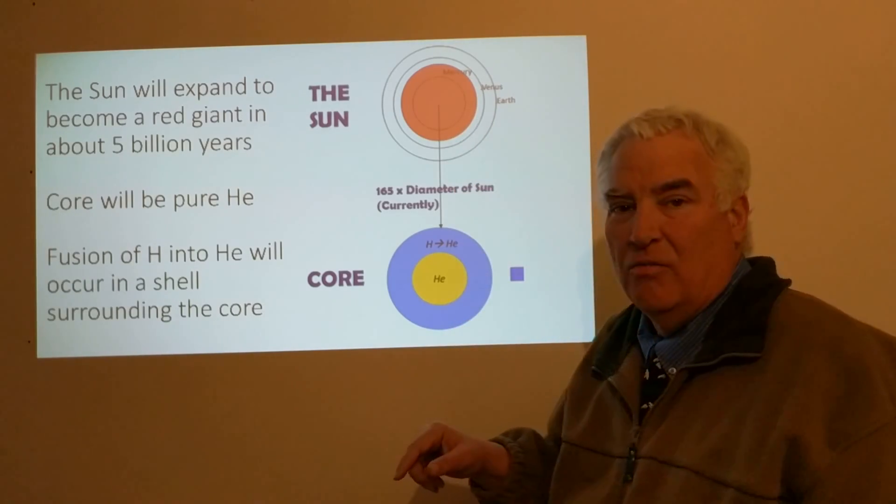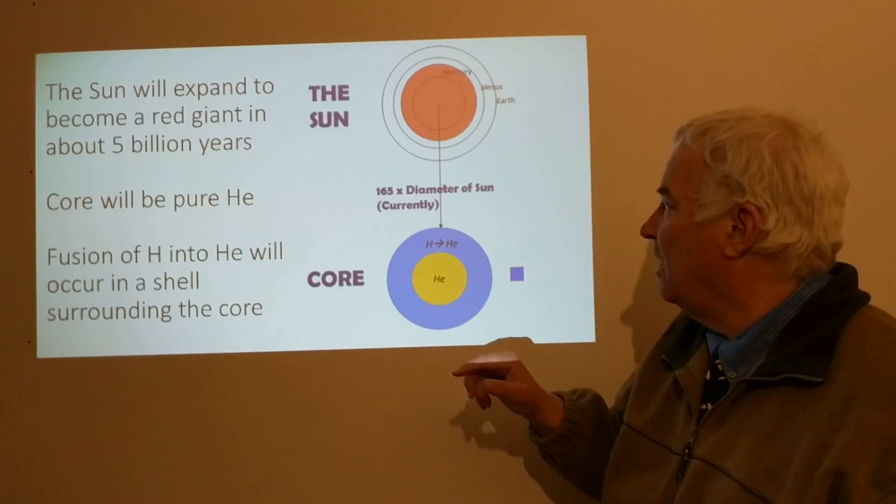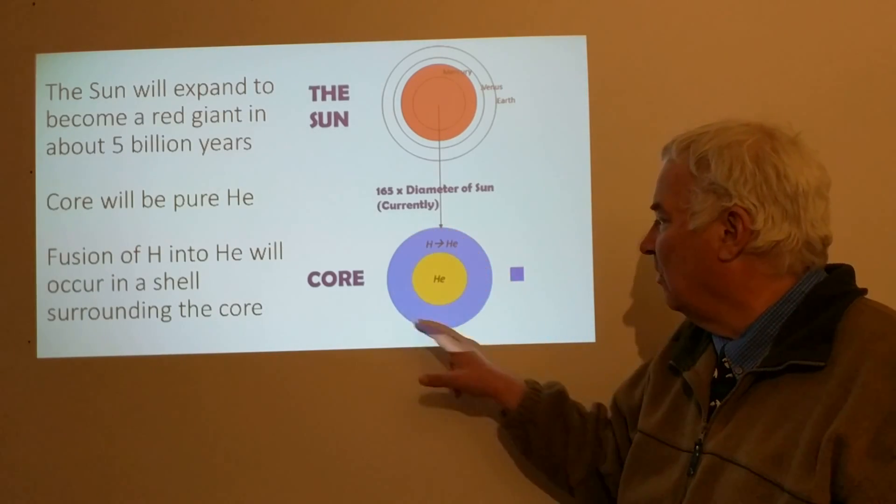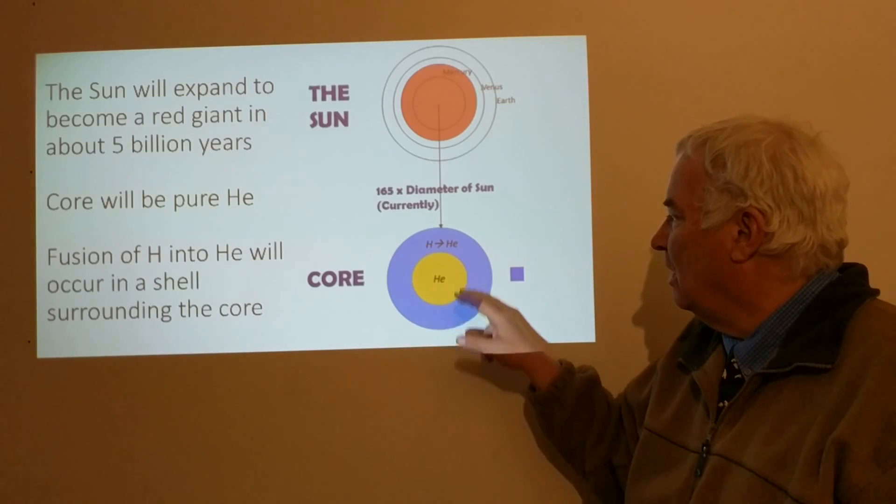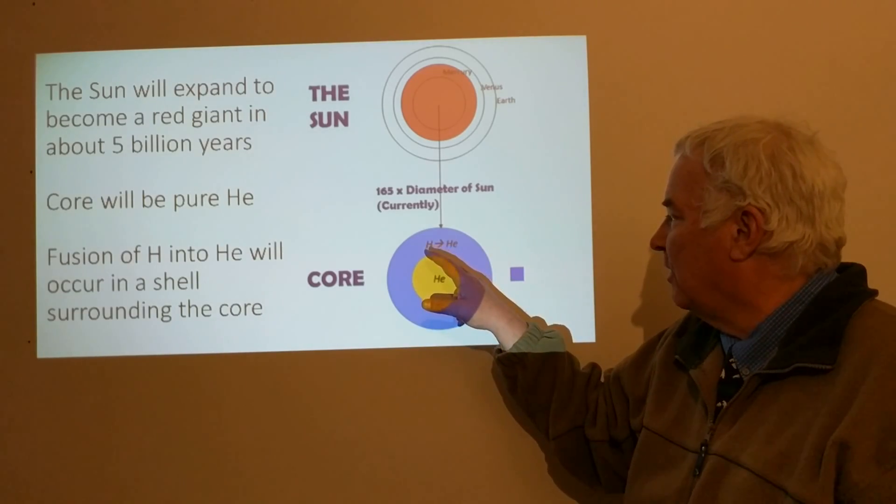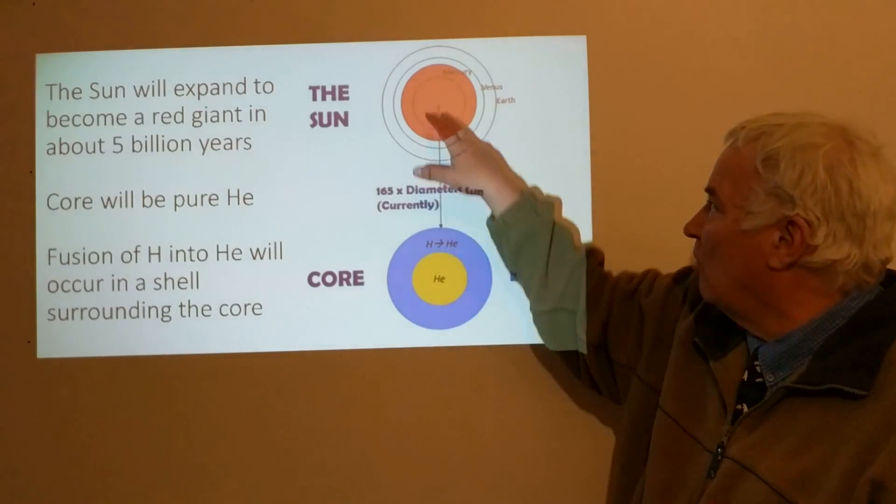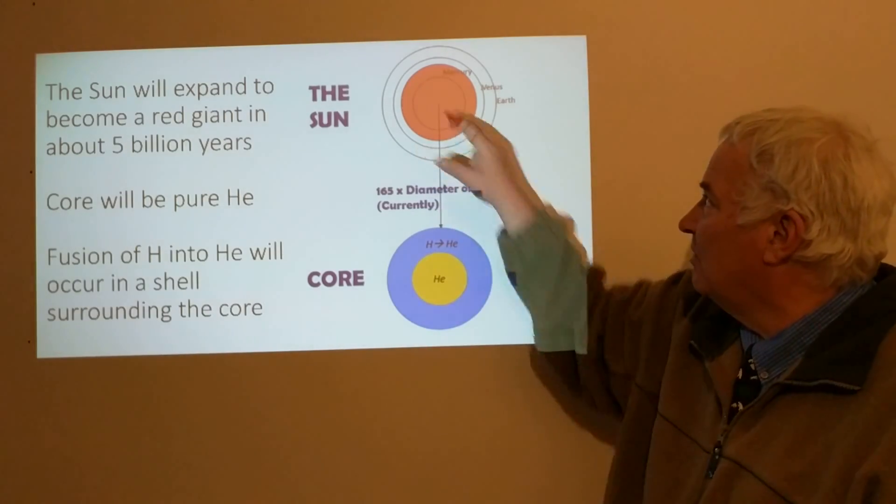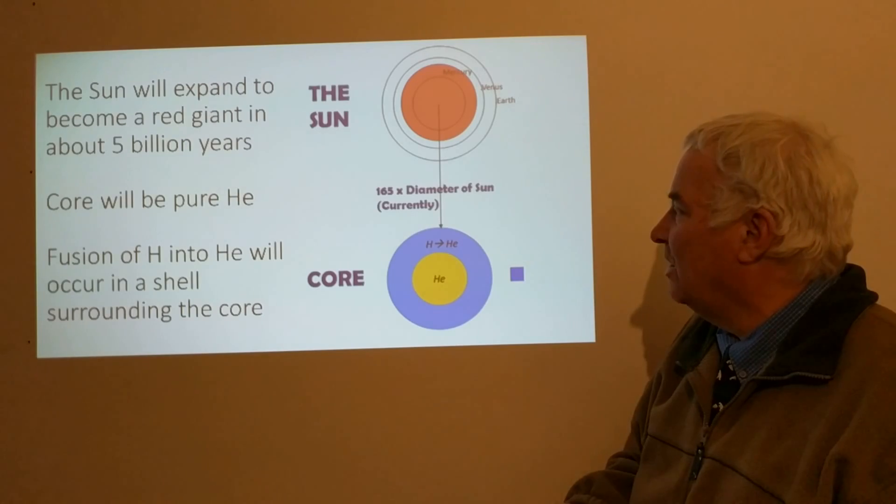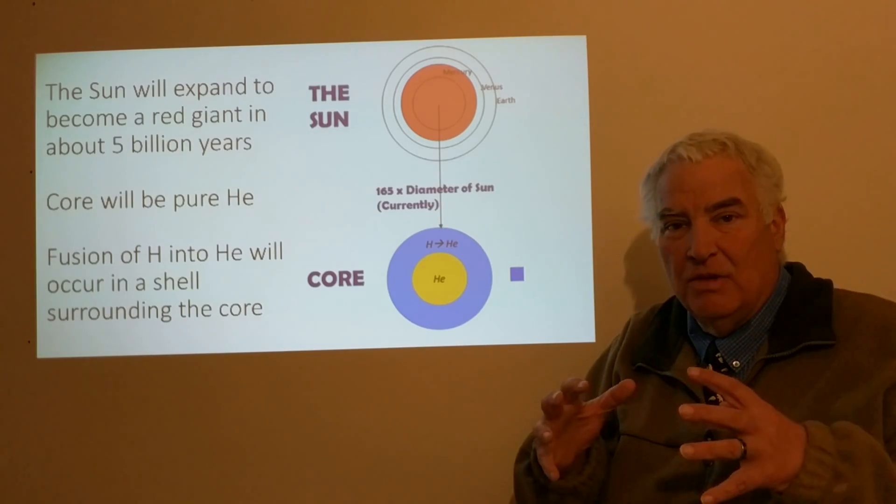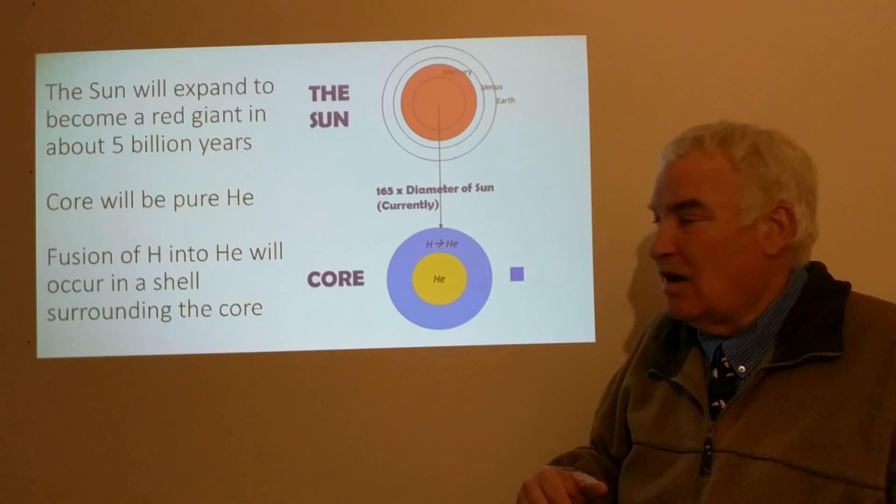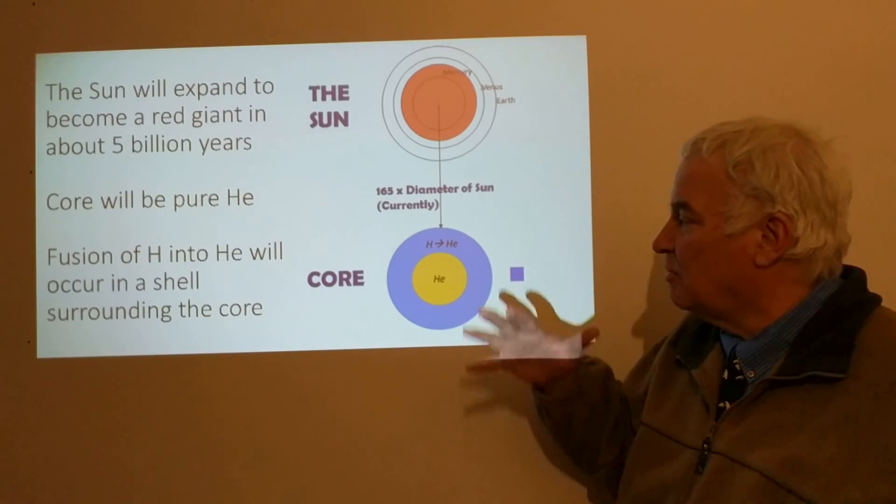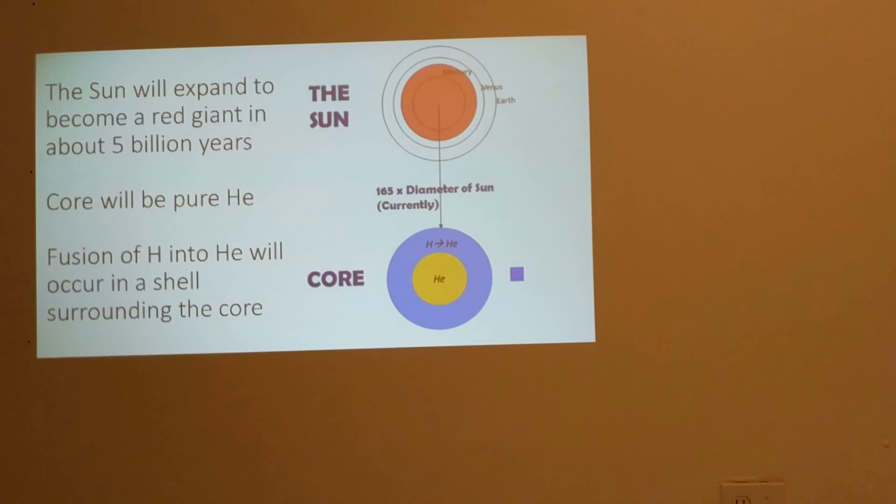During the red giant branch phase, the core will have helium and there will be a shell surrounding the core which is converting hydrogen into helium. The core is very small at the center of the red giant, and the red giant continually gets larger as time goes on. This is not a steady state; it will expand and continue to do so.